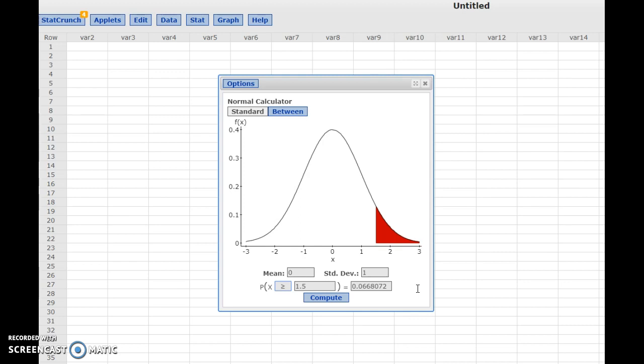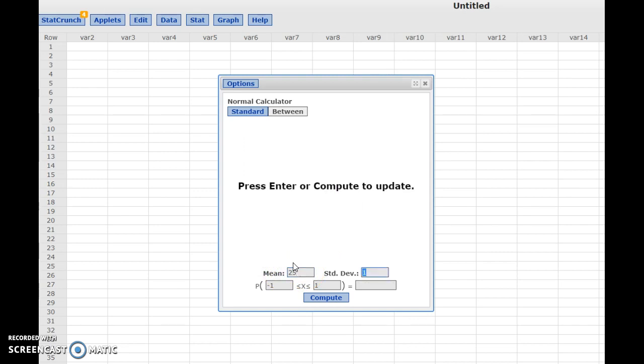I can also find the area or data values between two parts of the graph by selecting Between at the top and entering the given information in the same way. For example, if I have a data set that's normally distributed with a mean of 25 and a standard deviation of 2, I can enter 25 and 2 here in the appropriate fields for mean and standard deviation.